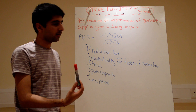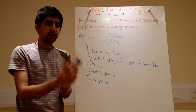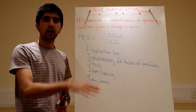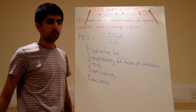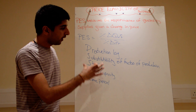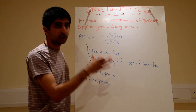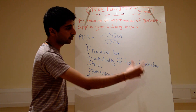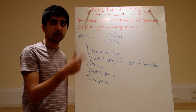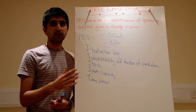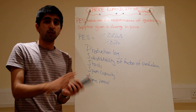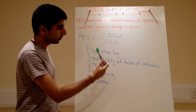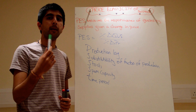Substitutability of factors of production — what does that mean? Say a firm can produce two different types of goods, maybe vans or cars, and at the moment it's specialising in car production. But then the price of vans goes up massively because demand has increased. That firm can respond quickly if it can substitute its factors of production away from car production and towards van production. If the factors of production are very substitutable, supply can respond quickly and is very elastic. But if it's very difficult to transfer factors into van production, supply will be inelastic.